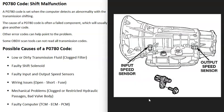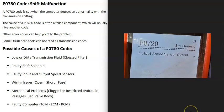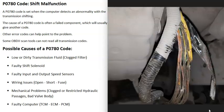Another possible cause is a bad input or output speed sensor. If one of these sensors goes bad, it may report bad information back to the computer, which throws everything off and causes other codes. For example, if you've got a P0720 code for output speed sensor circuit, it's a good idea to go test that output speed sensor and make sure it's working correctly.